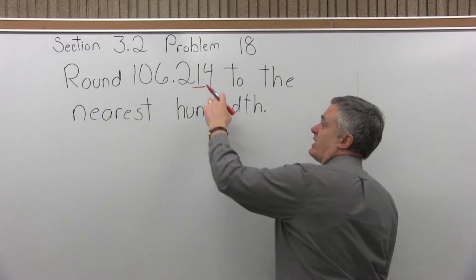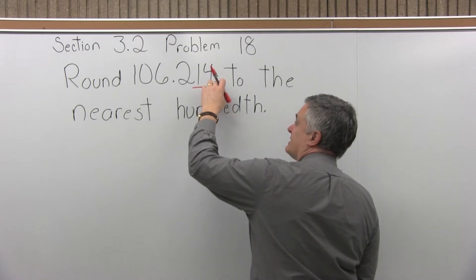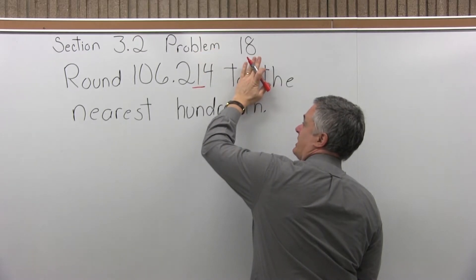So I want to look over one position to the right, the four. If that digit is zero, one, two, three, or four, which it is, we just remove the digits that come after the rounding position and we're done.